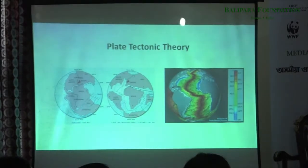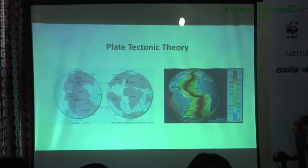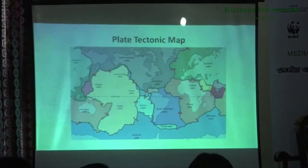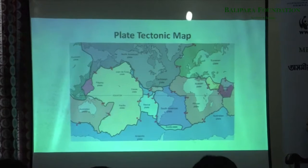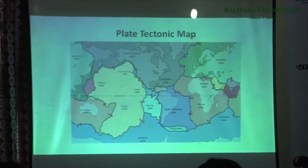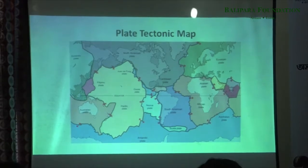The plate tectonic theory states that all the plates across the crust of the earth are in constant motion relative to each other. That's the reason why you have mountains being built, tsunamis, and earthquakes, most importantly. We are right now sitting on a part of a plate which is tectonically extremely active. We are in zone 5, which means you can have earthquakes up to almost 8 on the Richter scale.